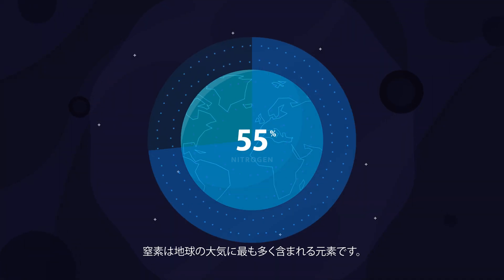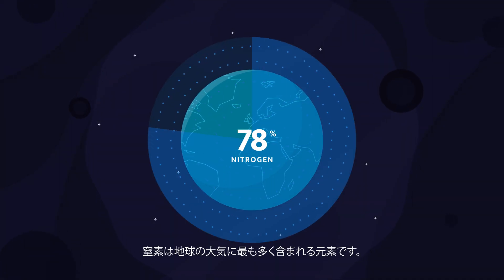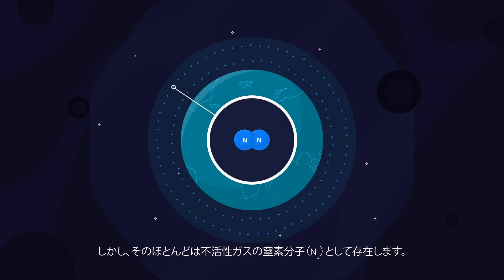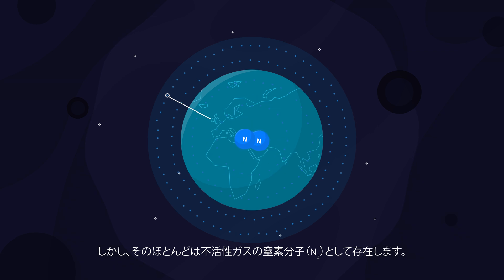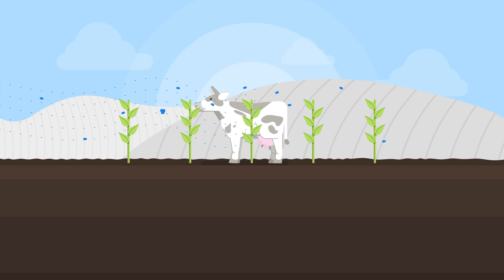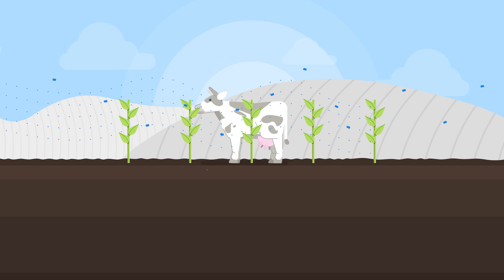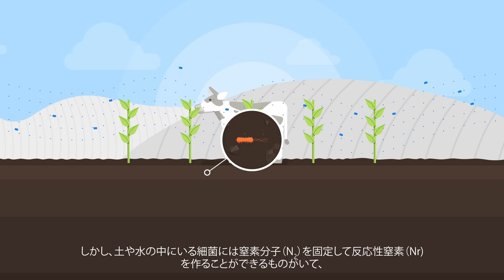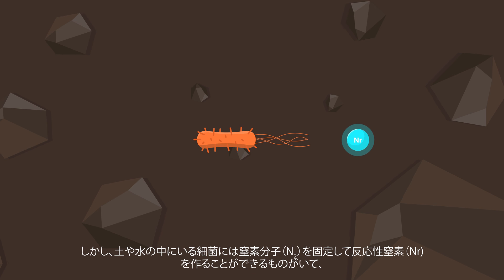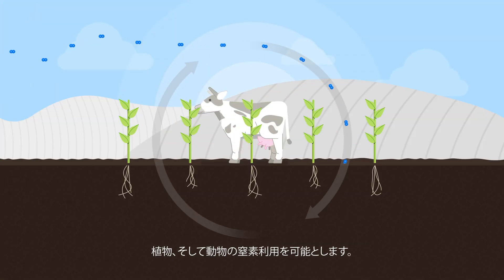Nitrogen is the most abundant element in the Earth's atmosphere. But most of it exists as molecular nitrogen, a non-reactive gas, and cannot be used by plants and animals. But bacteria in soil and water can fix molecular nitrogen and create reactive nitrogen, making it available for plants and then for animals.